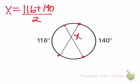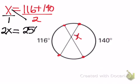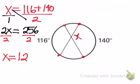It's easier if we make it a proportion to solve it, so I'm going to put it over 1. That gives me 2x equals 116 plus 140, which is 256. To solve for x, I use the division property of equality and divide both sides by 2. So x, which represents angle one, is 128 degrees. Looking at my picture, that is an obtuse angle, so the answer is reasonable.